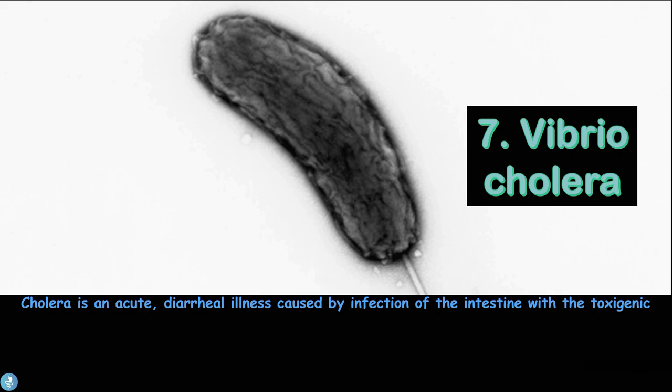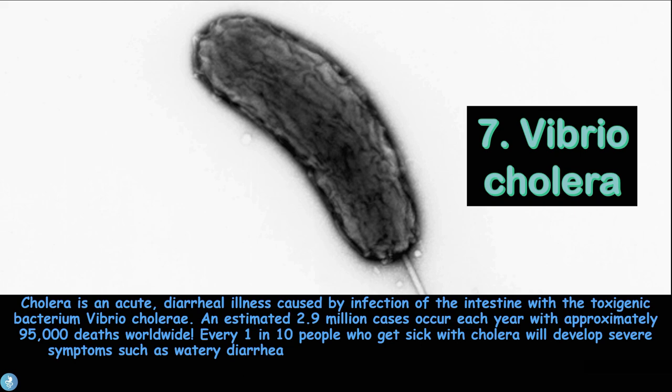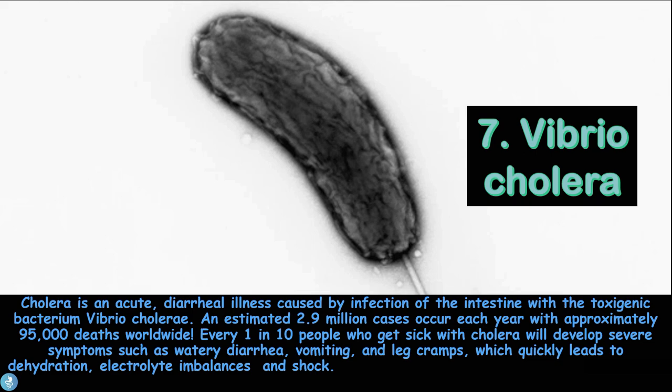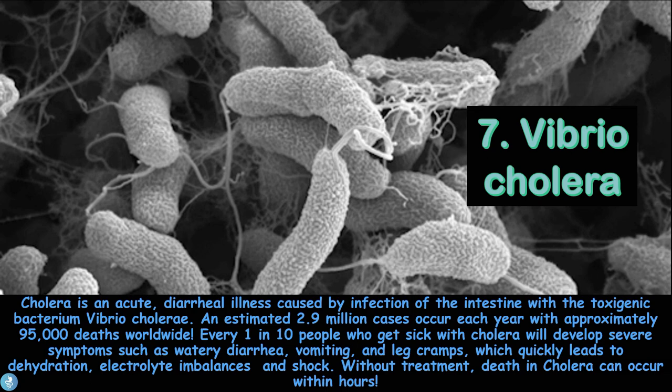Number seven is cholera, an acute diarrheal disease caused by infection of the intestine with the toxigenic bacterium Vibrio cholerae. An estimated 2.9 million cases occur each year, with approximately 95,000 deaths worldwide. One in ten people who get sick with cholera will develop severe symptoms such as watery diarrhea, vomiting, and leg cramps, which can quickly lead to dehydration, electrolyte imbalances, and shock. Without treatment, death can occur within hours.